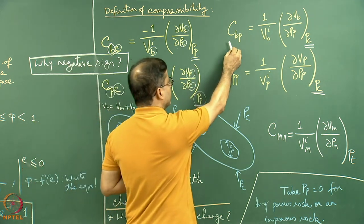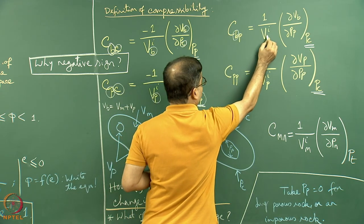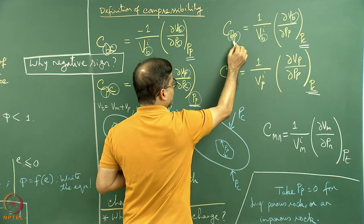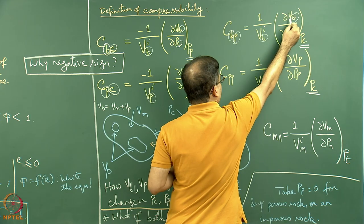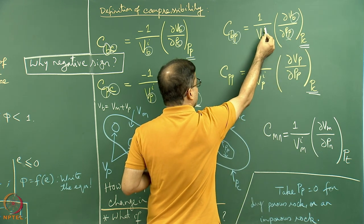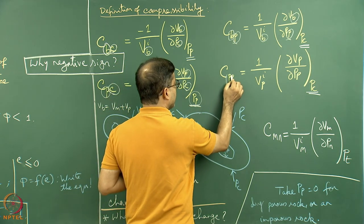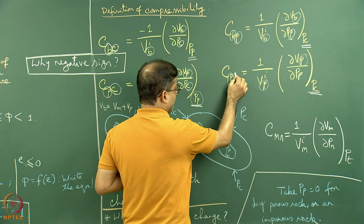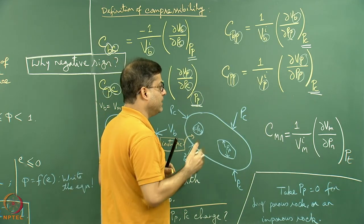For Cbp: the first suffix b indicates change in Vb is being considered, and the second suffix p indicates that Pp is being changed. That means: change in Vb with change in Pp at constant Pc, divided by the initial Vb (Vib). For Cpp: the first suffix p means we consider change in Vp, and the second suffix p means we consider change in Pp — which can increase or decrease — causing Vp to change accordingly.